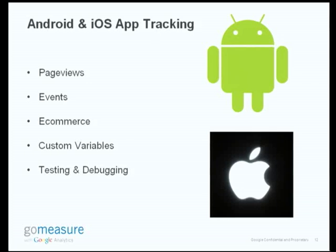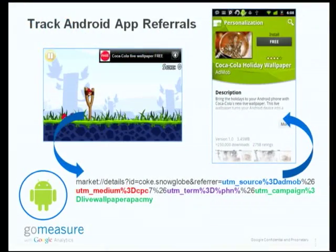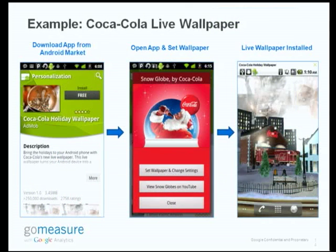There are some slight differences between iPhone and Android that we can discuss later. Looking at Android, it's the same URL tagging process already discussed in earlier presentations. You have an ad here — Coca-Cola has an ad here. They tag their URL with the correct parameters, take it to the Android market. The user downloads the app from the Android market. This app is a live wallpaper app. We're able to see the whole stream: the download, the interaction within the app, the application of the live wallpaper, the watching of the YouTube video.